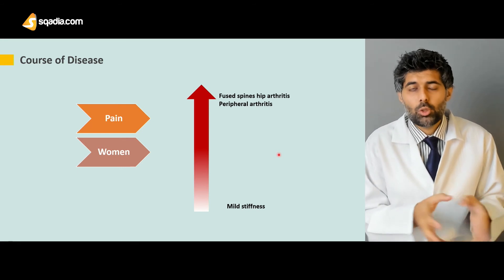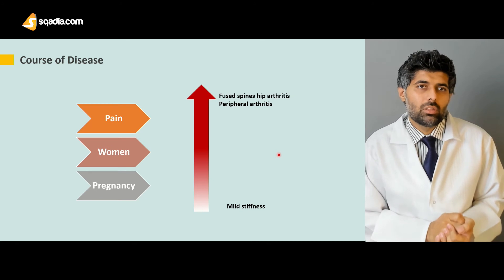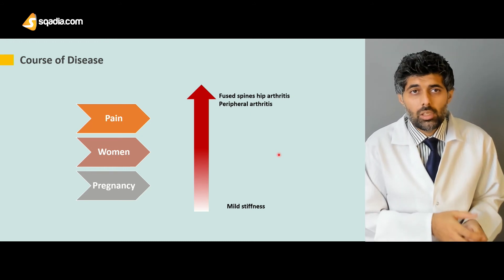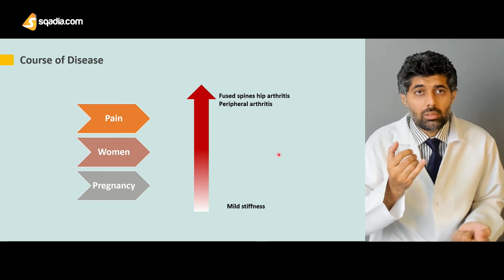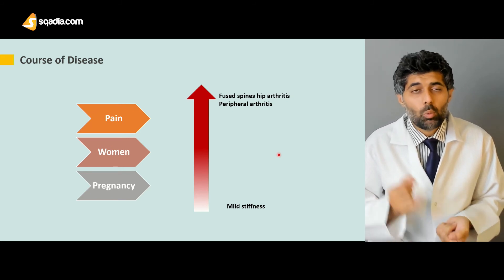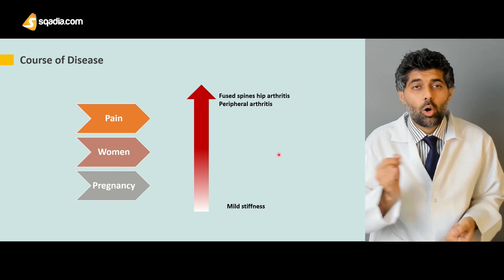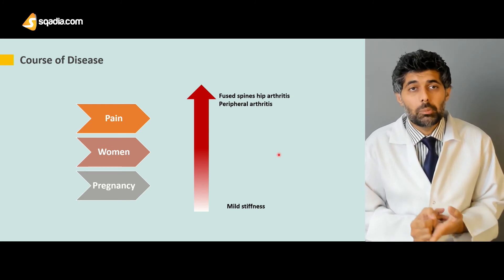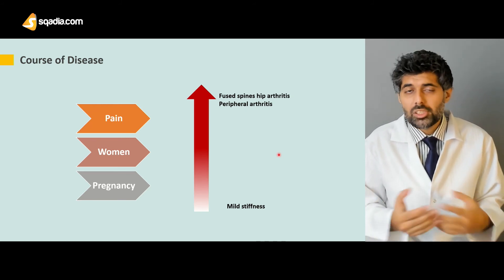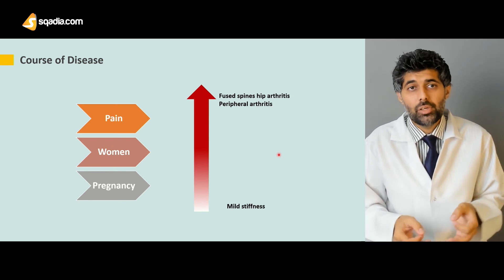Next is pregnancy. Pregnancy has a very peculiar relationship to the course of ankylosing spondylitis. During the third trimester, the disease might remain the same, might improve, or might even get severe — you cannot predict the course. Therefore, in pregnant women with ankylosing spondylitis, close monitoring is vital to determine whether the disease is staying the same, worsening, or improving, as it varies from woman to woman.